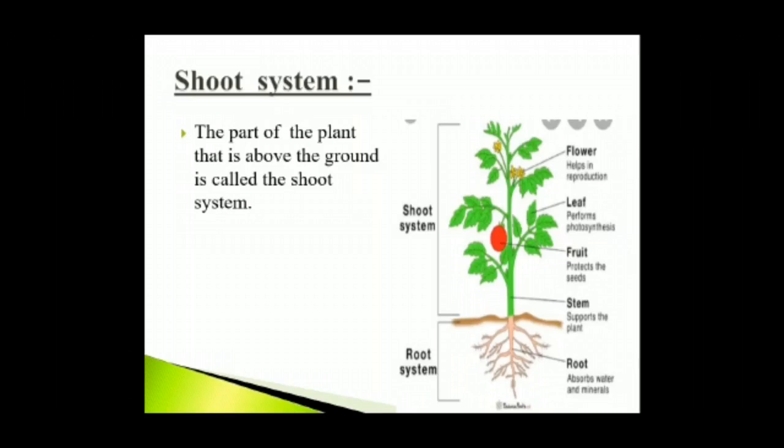The part of the plant that is above the ground is called the shoot system. It consists of stem, branches, leaves, flowers and fruits. Stem bears leaves, fruits, flowers and branches. Leaves make food for the plant. Flowers turn into fruits and fruits bear seeds.